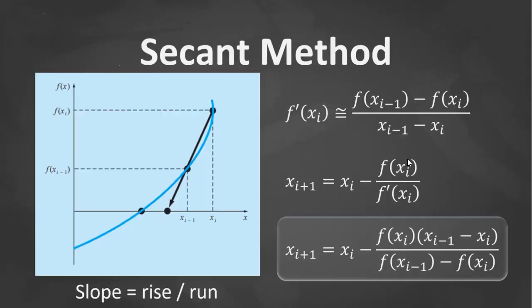A potential problem in implementing the Newton-Raphson method is the evaluation of the derivative, over f prime at xi. Although this is not inconvenient for polynomials and many other functions, there are certain functions whose derivatives may be extremely difficult or inconvenient to evaluate.